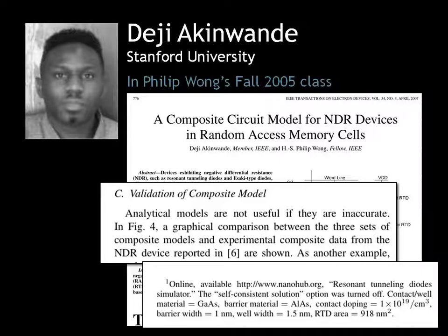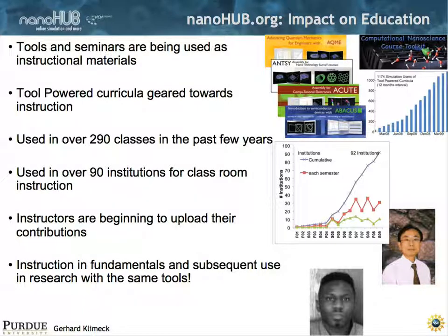This shows that the distinction between education and research is not all that clean-cut anymore. You can't say this is only an educational tool and can't be used for research, or that this is just a research tool and can't be used for education. There have been some 294 courses taught at over 92 institutions that we know about, and roughly per semester we have about 40 courses all over the world that utilize NanoHub for teaching. So clearly it is being used for educational purposes.